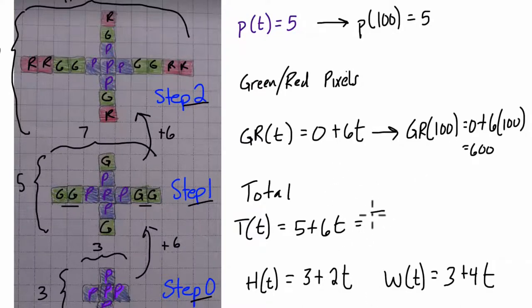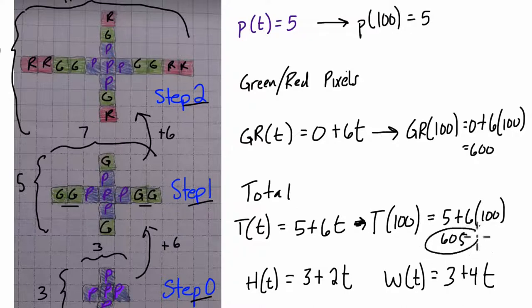Total pixels, well, total as a function of time, total when, right, step 100 is 5 plus 6 times 100, and that's 605, so there'll be 605 total pixels, 600 green and red pixels, and 5 purple pixels.